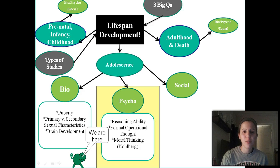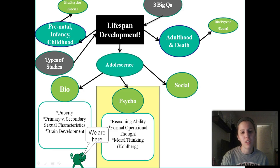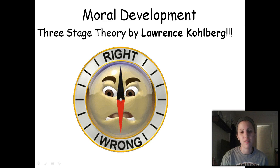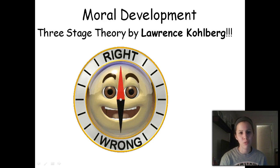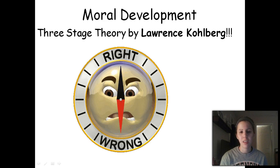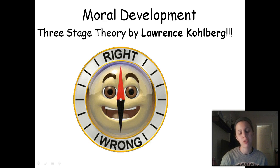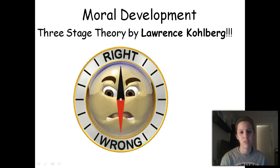In this video we're going to be looking at the psychological influences on adolescent development, and specifically what's going to drive most of this video is an adolescent's moral development — how do they decide what's right and what's wrong, and how does that development process take place. The key theorist we're going to look at is Lawrence Kohlberg, so you're going to want to title your notes Kohlberg's Theories of Moral Development.